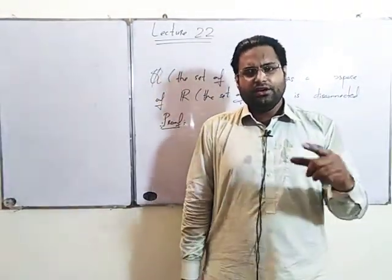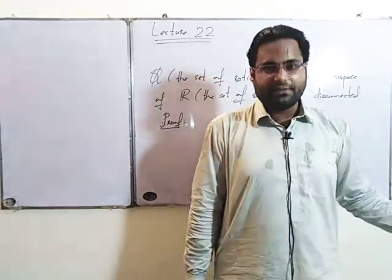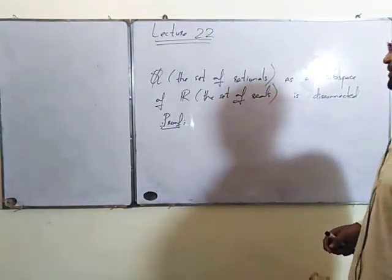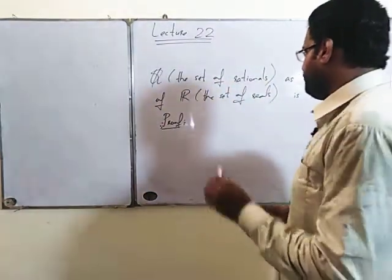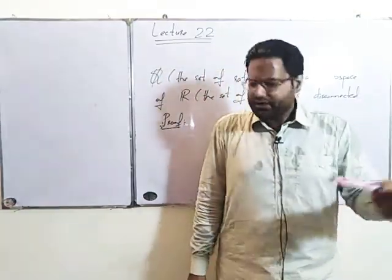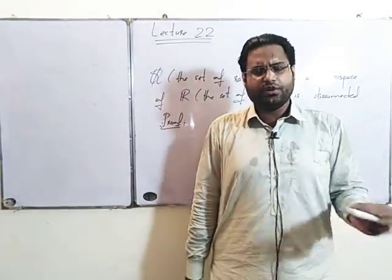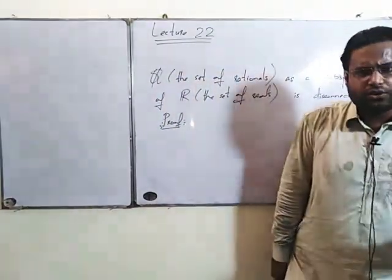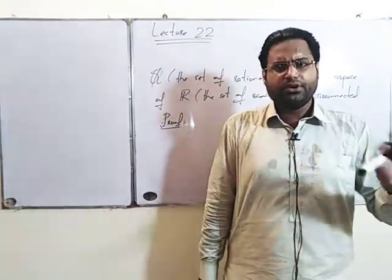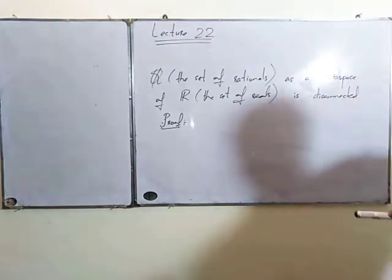Aaj ki jo problem hai yeh ek bohut particular problem hai — yeh disconnected topological space ki ek example hai. Aur yeh particular example hai, bohut unique, aisi example nahi hai jiske mazeed examples nikalay ja sakein. Set of rational numbers kya hote hain? P by Q form mein likhe ja sakein, lowest form mein, jahan P aur Q integers hoon, Q non-zero ho.